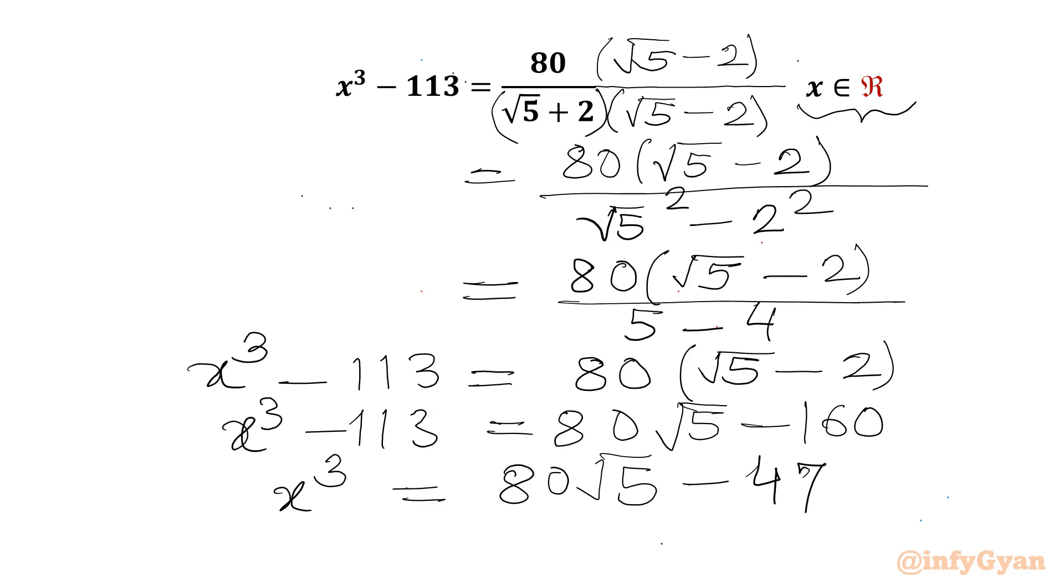Let us say this is our equation number 1. Because 80 root 5 is greater than 47, we can say x cube must be positive. For real x, we can conclude x must be positive.